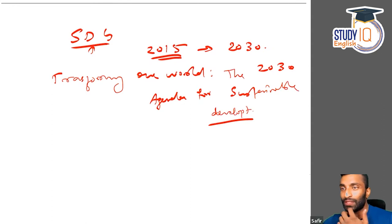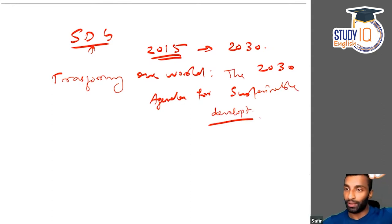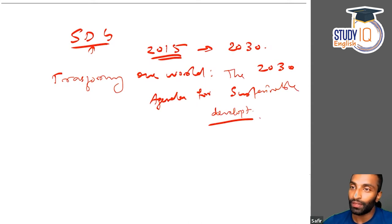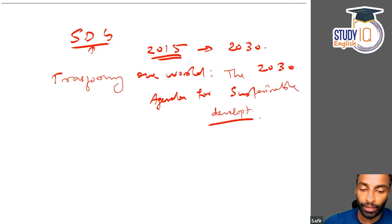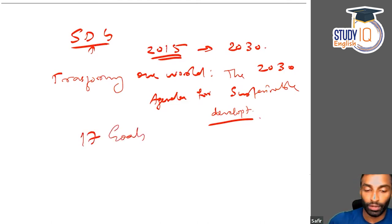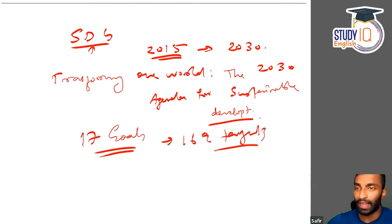The definition of sustainable development: you can use resources without threatening or compromising the needs of the future. Your greed should not compromise the needs of the future. It was originally introduced in 1972 at the Conference on Human Development. There are 17 goals and 169 targets. It is very difficult to discuss all 169 targets.